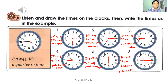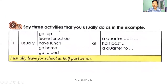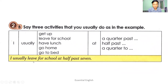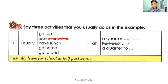Say three activities that you usually do, as in the example. For example: I usually get up at a quarter past... I usually leave for school, I usually have lunch, I usually go home, I usually go to bed. You can tell the time like that — at a quarter past, at half past, a quarter to. For example: I usually leave for school at half past seven.